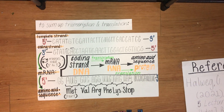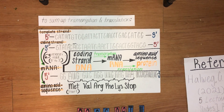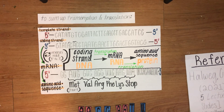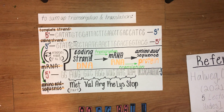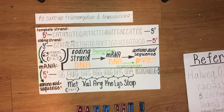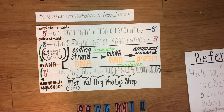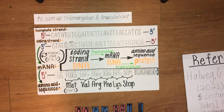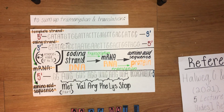Looking here we see the template and coding stranded DNA. Our first step is transcription, in which we go from our coding stranded DNA to our mRNA. And from here, through translation, we will go from our mRNA sequence to our amino acid sequence and then to our respective protein.